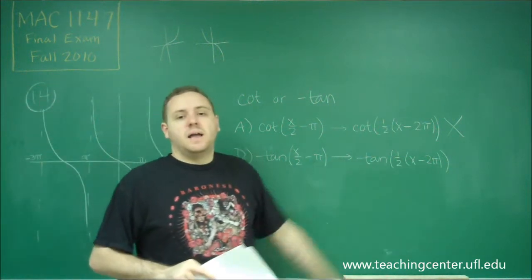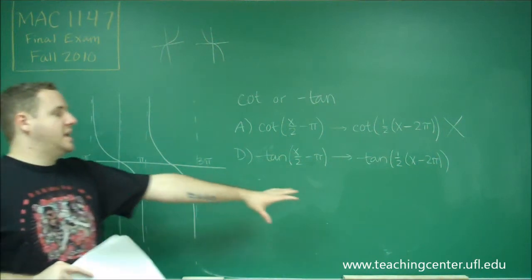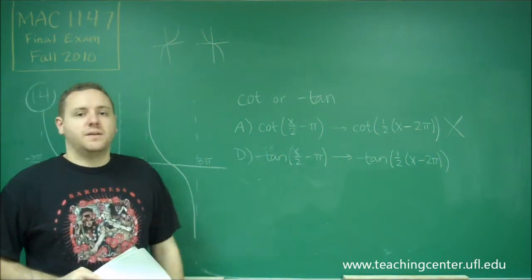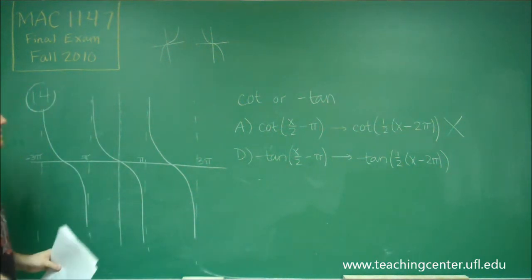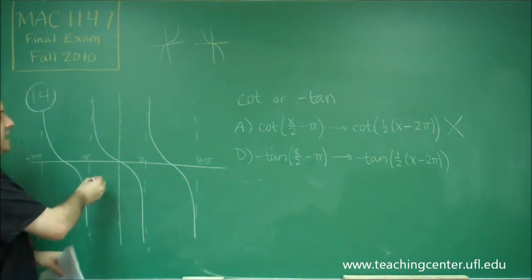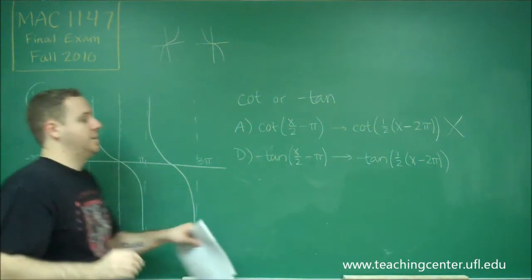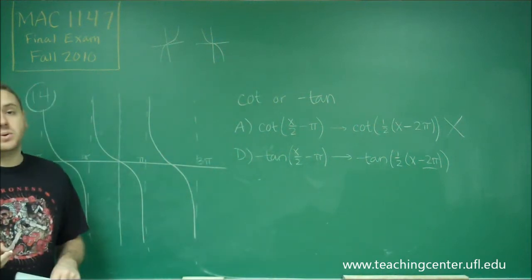And this was shifted by an entire period. So basically, this would look the same as if it was just tangent of 1/2 x because we shifted it by an entire period anyway. Tangent normally does go through the origin. So this is set in the right position or an entire period off like we have here. Therefore, this one is going to be correct.